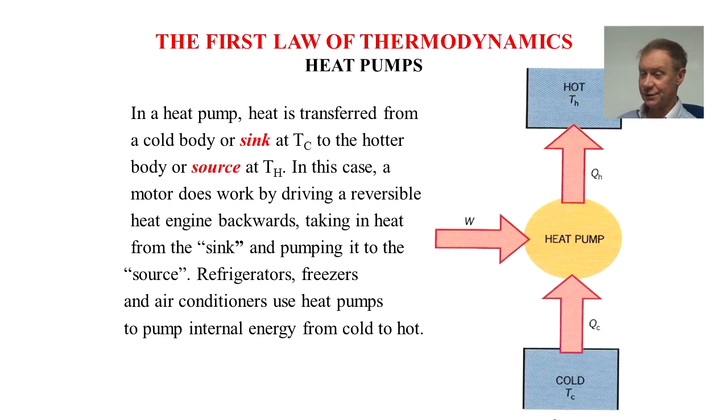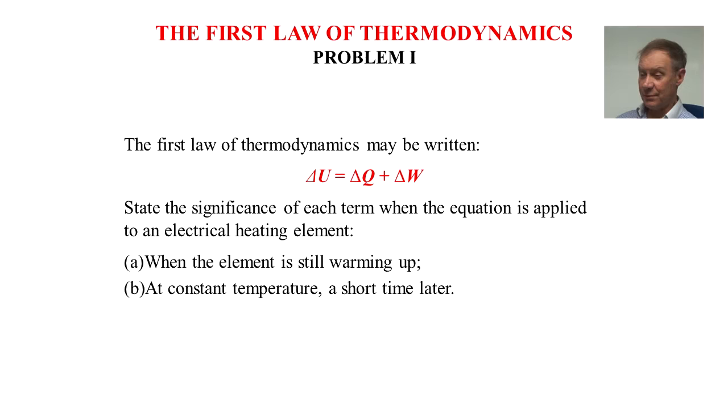Let's have a look at some problems. The first law of thermodynamics can be written delta U is delta Q plus delta W. They want the significance of each term when the equation is applied to an electrical heating element, when the element is still warming up and at constant temperature a short time later. If you want to stop the slide now, you could have a go and try to solve the problem, which will follow in a few seconds.